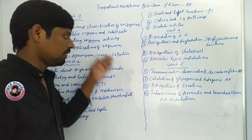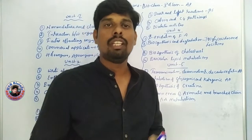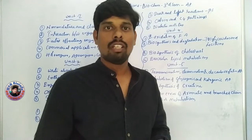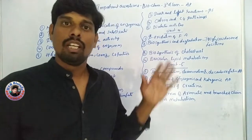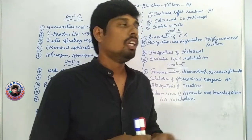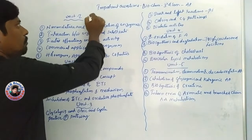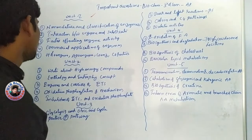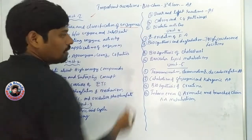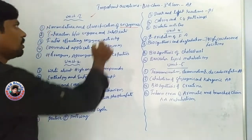The first node: the most important task will cover 5 units. First, the first part is the nomenclature and classification of enzymes. Enzymes are classified — what naming is the important question.